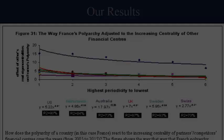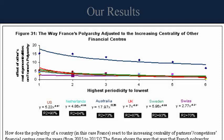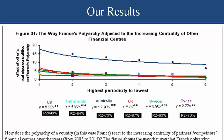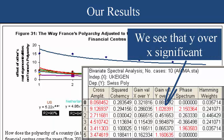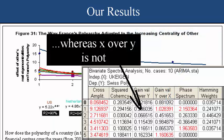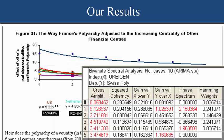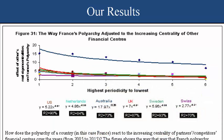Why do I say 'in response'? Figure 31 shows a type of analysis known as spectral analysis. Without going into the details here, using complicated statistical procedures such as Fourier analysis and wave analysis, we're actually able to look at causality between polyarchy and this eigencentrality. Almost unequivocally, polyarchy is the response to eigencentrality, and not the other way around.